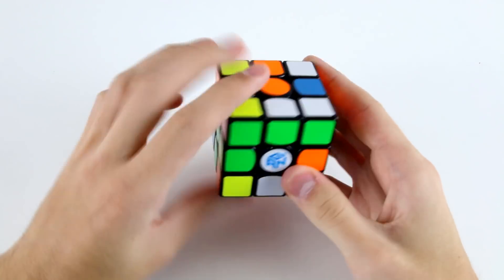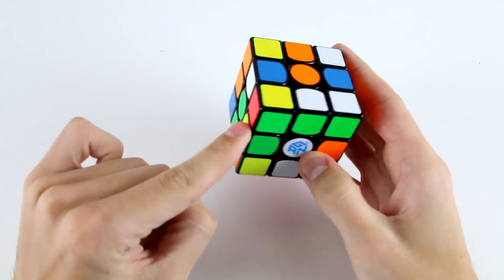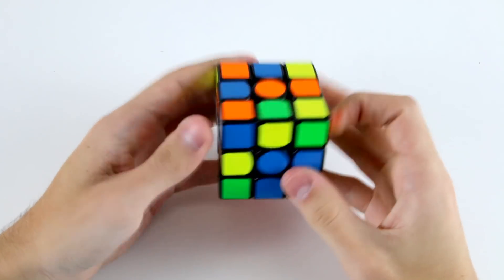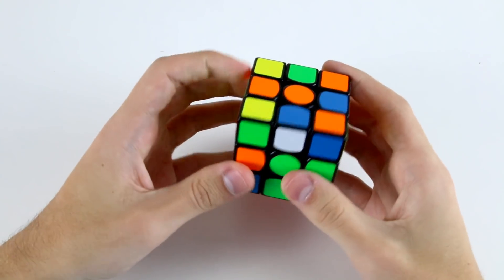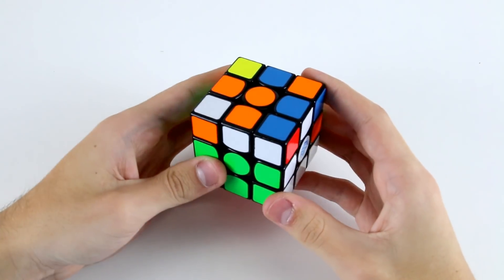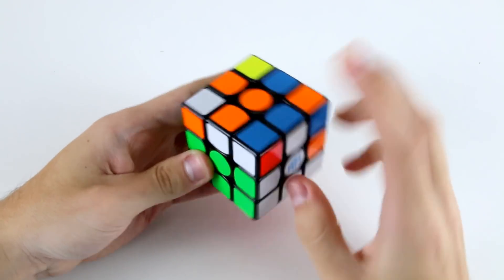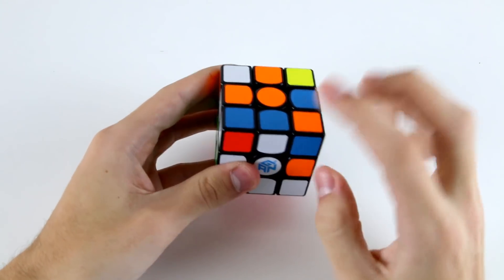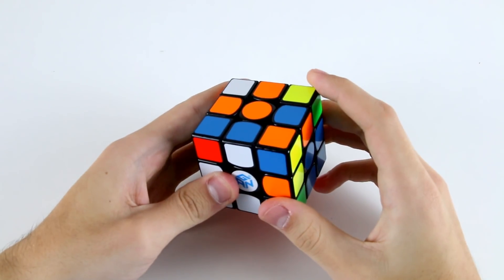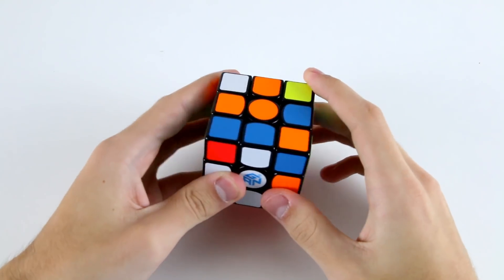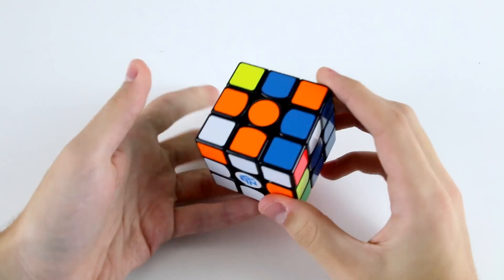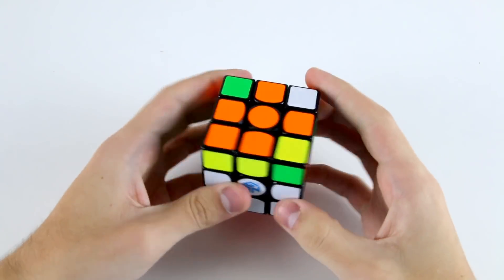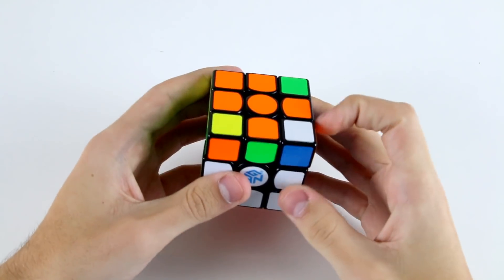Then the first F2L pair that I see are these two and whilst I'm doing them I see that these two will come out to this position so I can insert them. I think I'd probably insert them like that. Then I've got this F2L pair here and because I'm going to do a rotation anyway what I'm going to do here is solve these two and orient my last layer edges. I can do that by doing something like that and then inserting them and then I've got OLL.